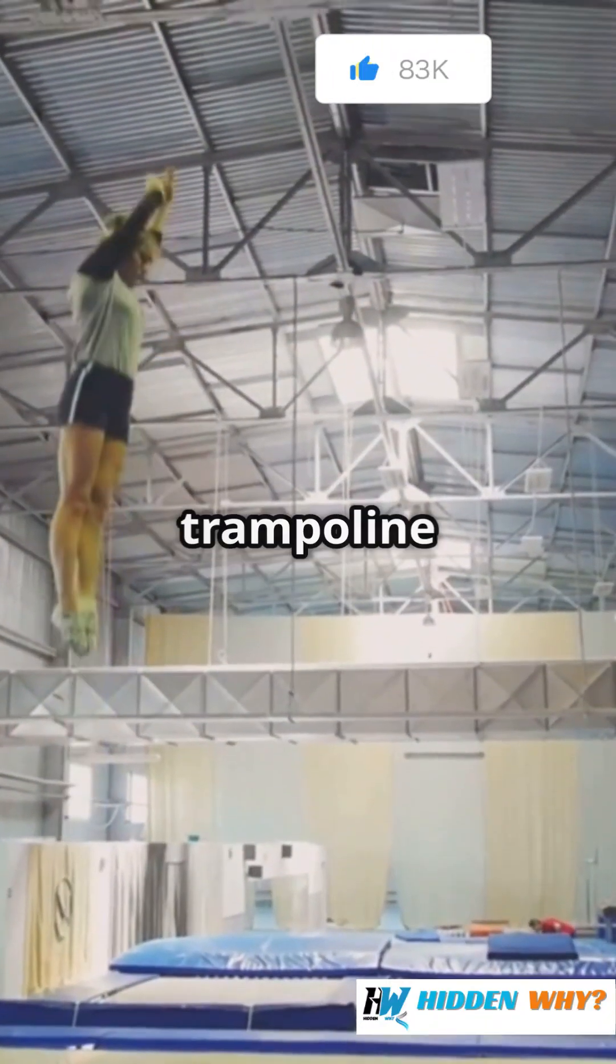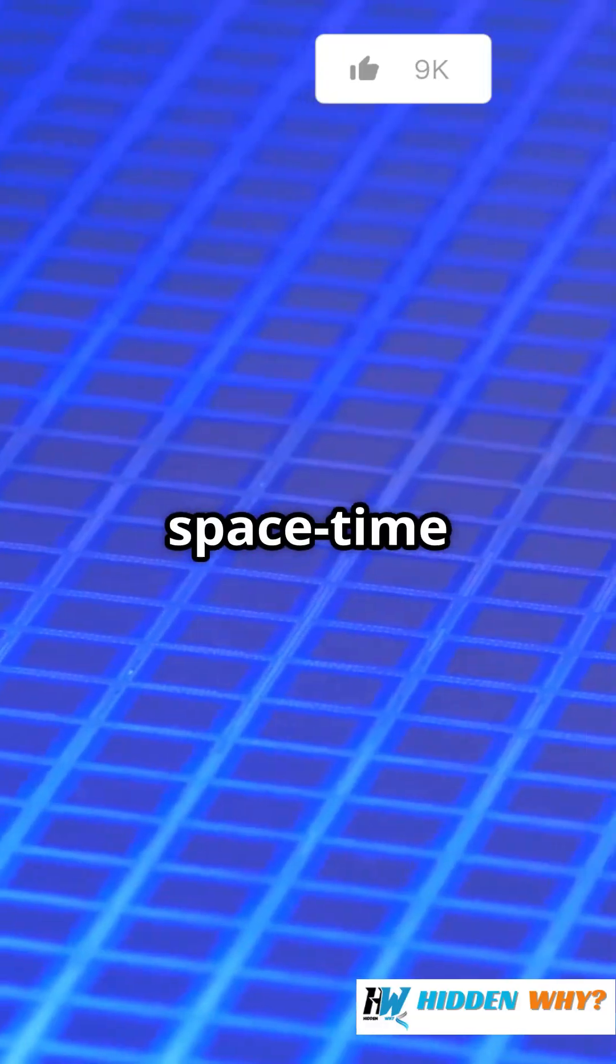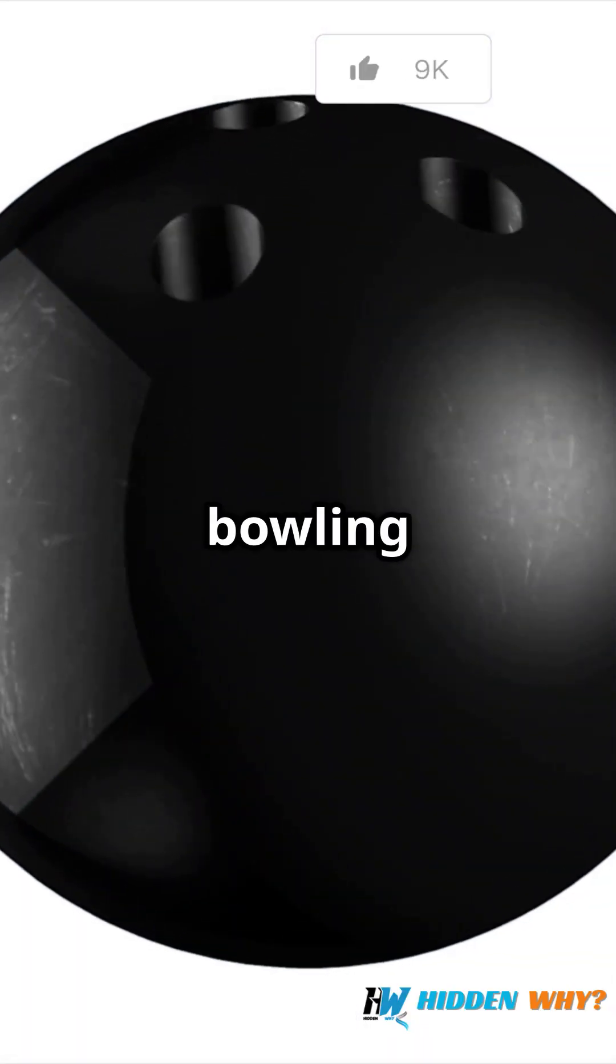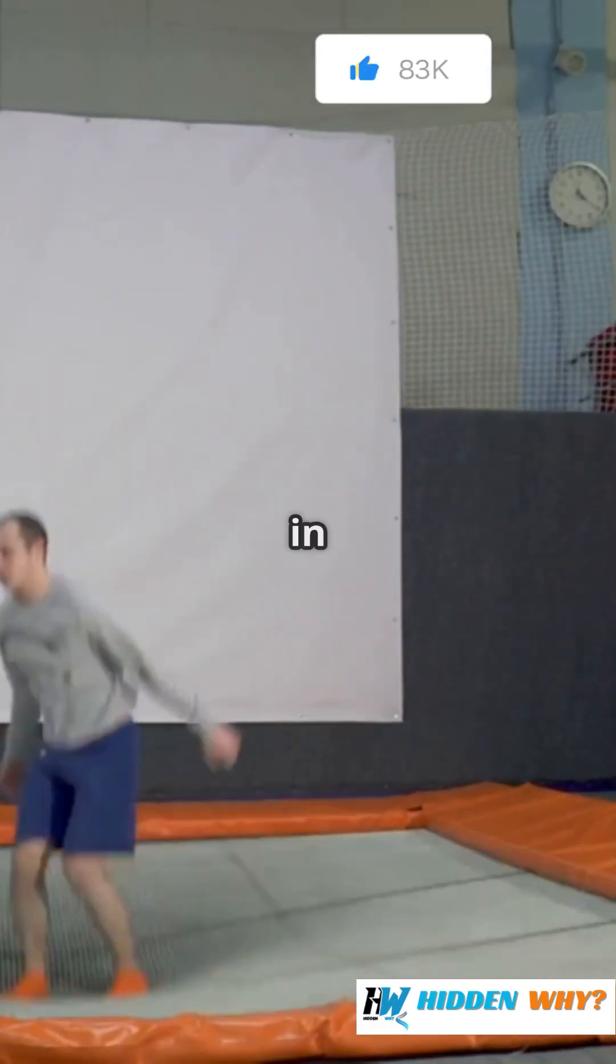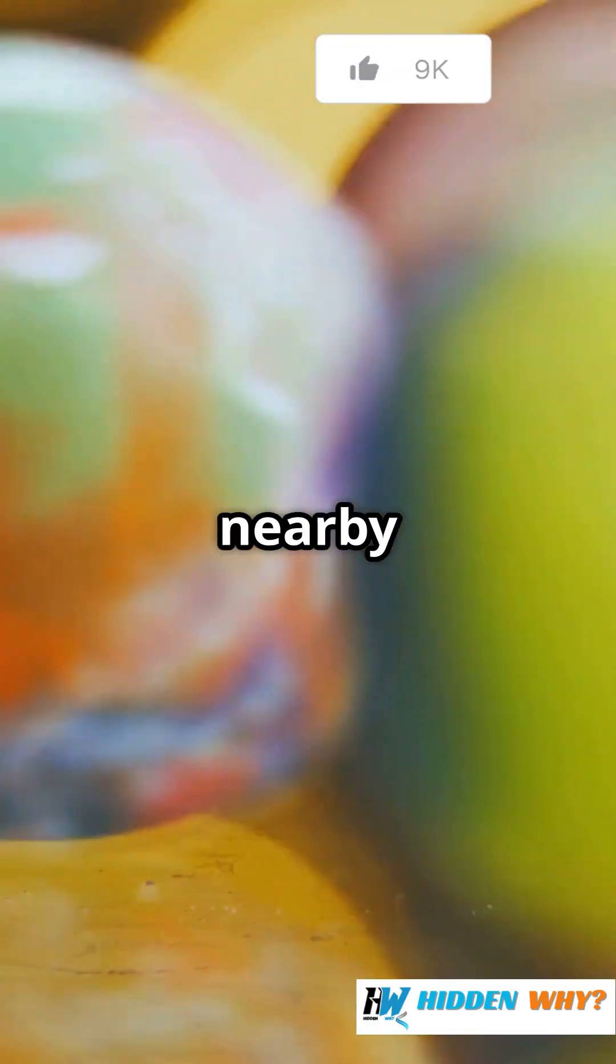Imagine laying a giant trampoline out flat, that's space-time undisturbed. Now plop a bowling ball in the middle. That's a planet or a star. The ball creates a dip in the fabric and anything rolling nearby curves around it.